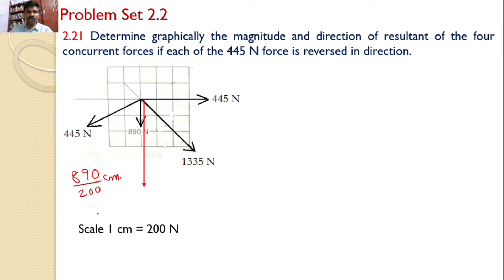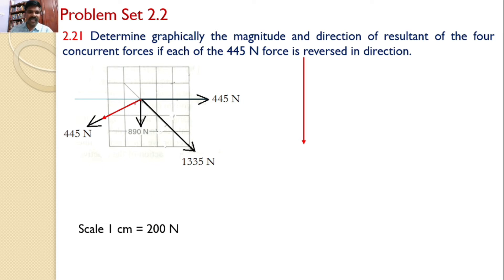Next, I will take this 445 Newtons force. The length of this 445 Newtons becomes 445 divided by 200. I will draw this line from the head of the previous force. Then I will take the next 445 Newtons horizontal force, with length also 445 divided by 200, and draw that line from the head of the previous force.